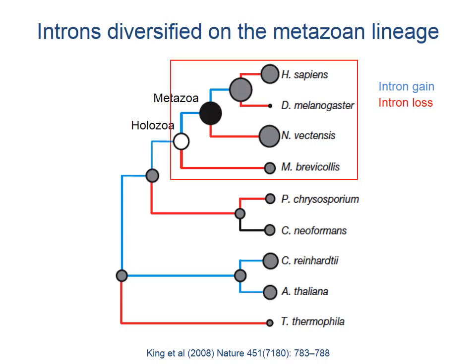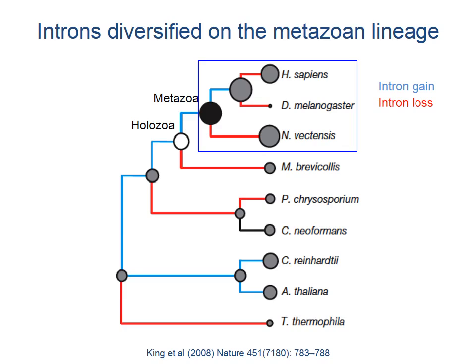In a figure showing intron evolution, branches with more intron gain are shown in blue while those with more intron loss are shown in red. The inferred number of introns present in each species is indicated by the sizes of circles. More introns were retained in animals compared to choanoflagellates, suggesting that on the lineage leading to metazoans, genetic innovation in how genes are controlled and assembled was occurring.